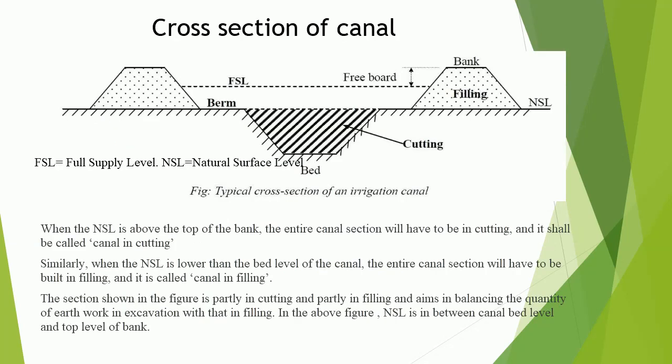Cross section of canal: the figure below shows the typical cross section of an irrigation canal. Based on the full supply level and natural surface level, canals can be of three types. When natural surface level is above the top of the bank, the entire section is in cutting — called canal in cutting. When natural surface level is lower than the bed level, the entire section is in filling — called canal in filling. The section partly in cutting and partly in filling aims at balancing earthwork in excavation with that in filling.